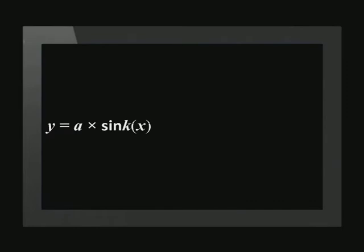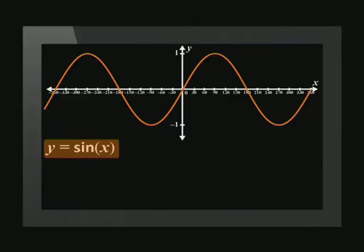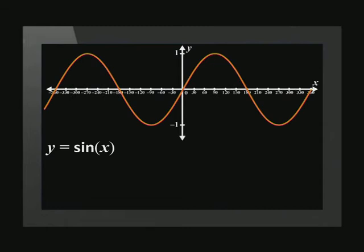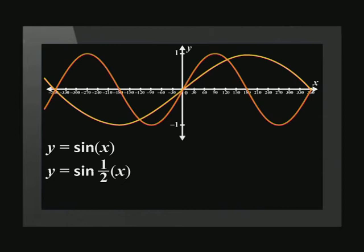We can also stretch or compress the sine function horizontally by changing the period of the graph. In order to change the period, we need to multiply the x-values of the graph. The variable k shows a change in period. Remember that the period of the graph is the number of degrees it takes for the graph to complete its shape. The period of the standard sine graph is 360 degrees. If we compress the period by a factor of 4, the function has the equation y equals sine 4x. If we want to stretch the period, we could multiply the x-values by half, giving us the graph with equation y equals sine half x.